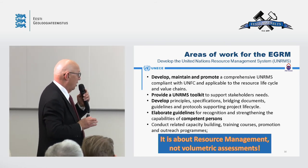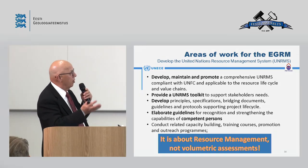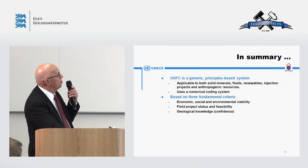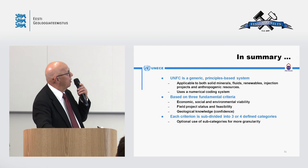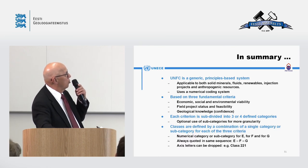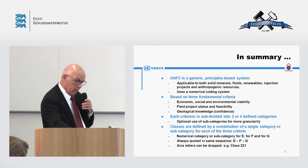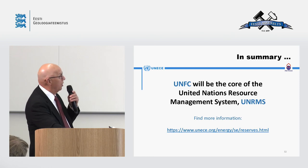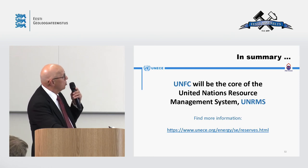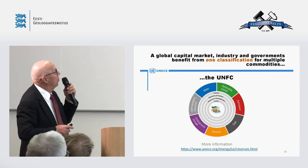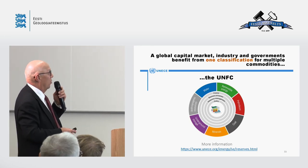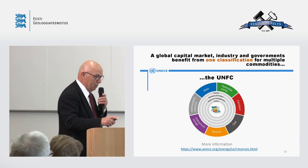It's about resource management, not volumetric assessment — it's about how to move a project from one maturity level to another. In summary, UNFC is a generic, principle-based system built on three fundamental criteria: economic/social/environmental viability, field project status and feasibility, and geological knowledge. These are combined into classes, and UNFC will be the core of the United Nations resource management system. Looking at the global market, industry and governments benefit from one classification for multiple commodities — and that is the UNFC.